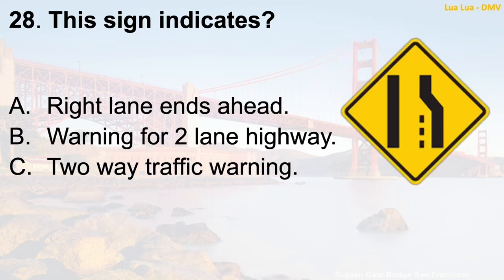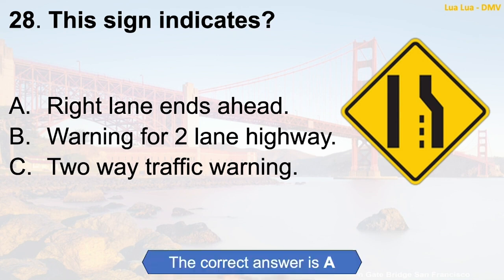Question 28: This sign indicates — A. Right lane ends ahead. B. Warning for two-lane highway. C. Two-way traffic warning. The correct answer is A: Right lane ends ahead.